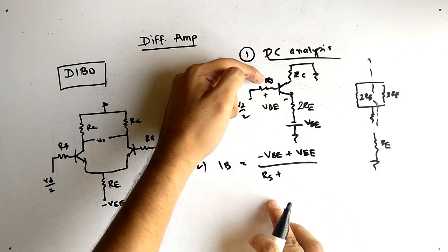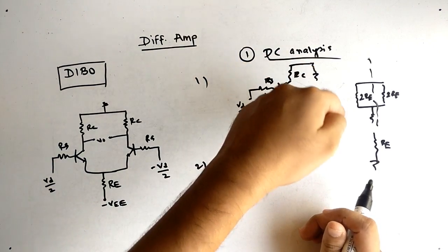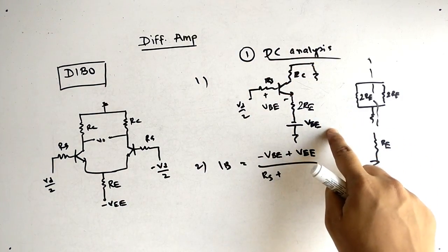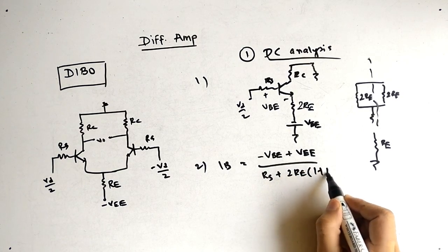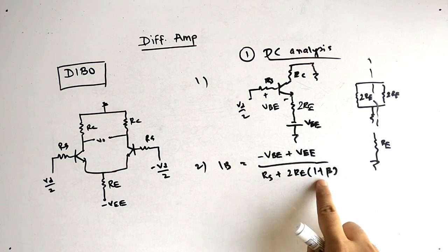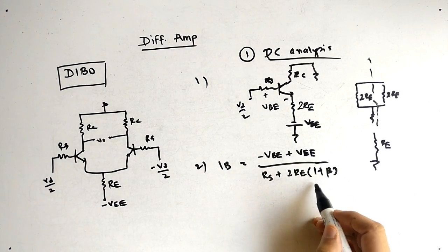Now we have to write the resistance at the denominator. So in denominator we will have first resistance as RS, then we will go forward. We will note that IE current flows here at the lower side with respect to twice RE, so we will have twice RE. But also we will have 1 plus beta factor, because IE current is flowing and we are writing equation for IB. So this 1 plus beta factor is because of that.